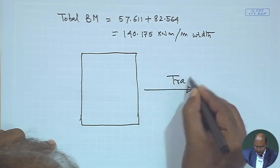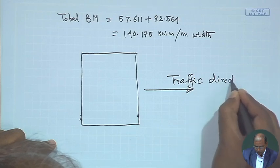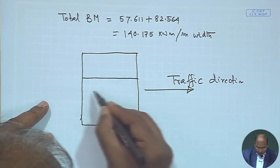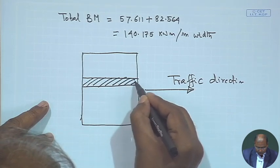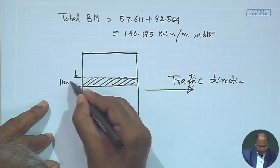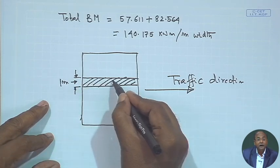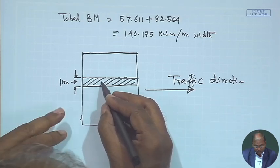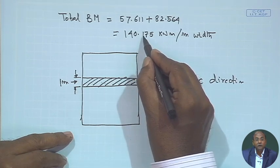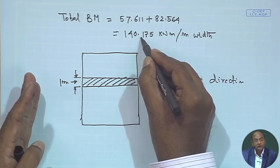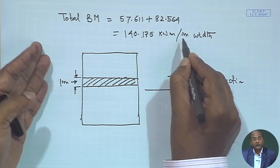The total bending moment = dead load BM (57.611 kN·m/m) + live load BM (82.564 kN·m/m) = 140.175 kN·m per metre width. With this total bending moment, we shall check whether the assumed overall depth of 460 mm is adequate, using both the working stress method and the limit state method. That check will be carried out in the next lecture. Thank you very much.